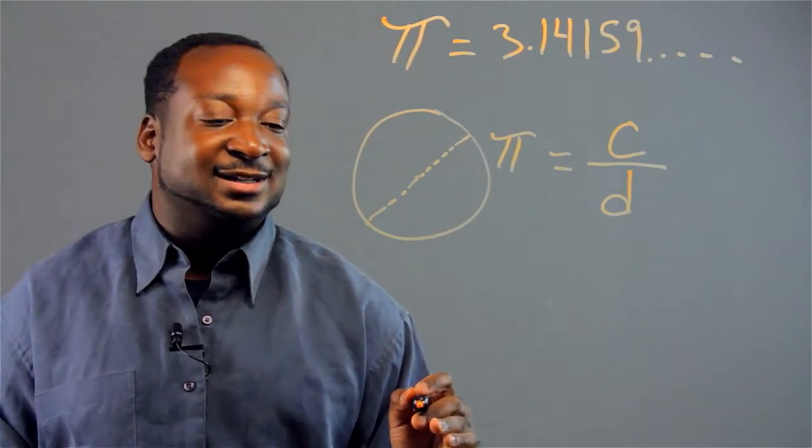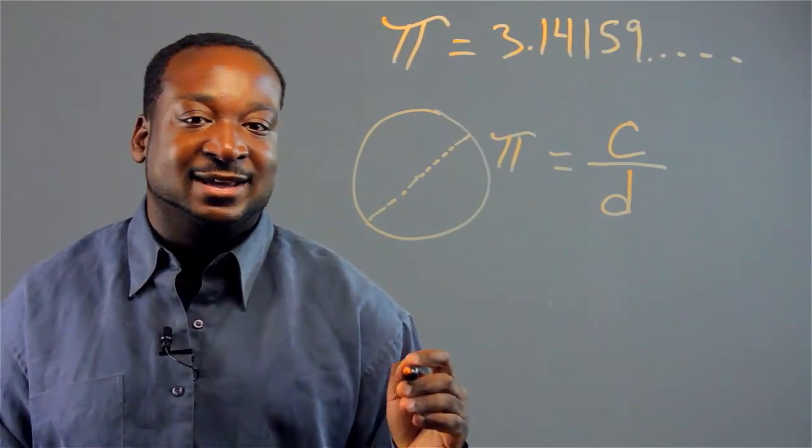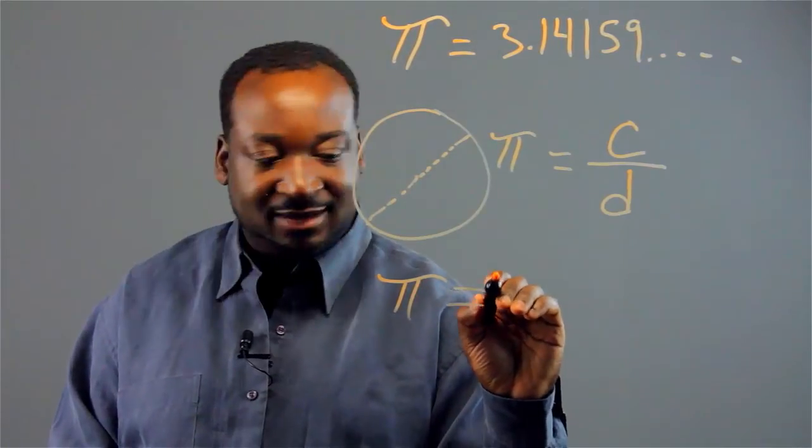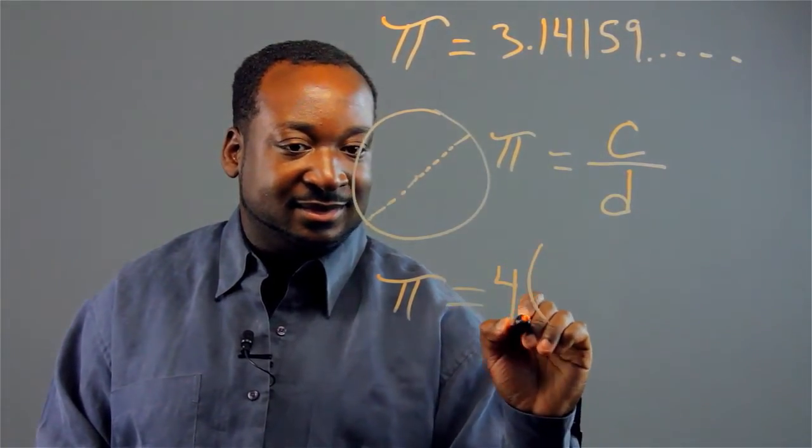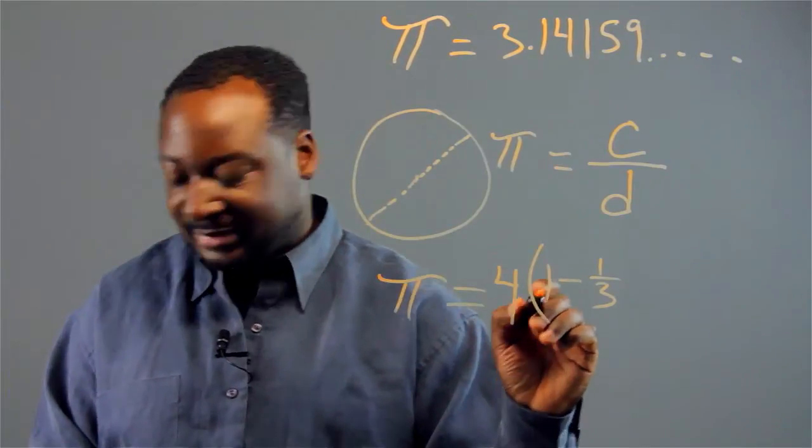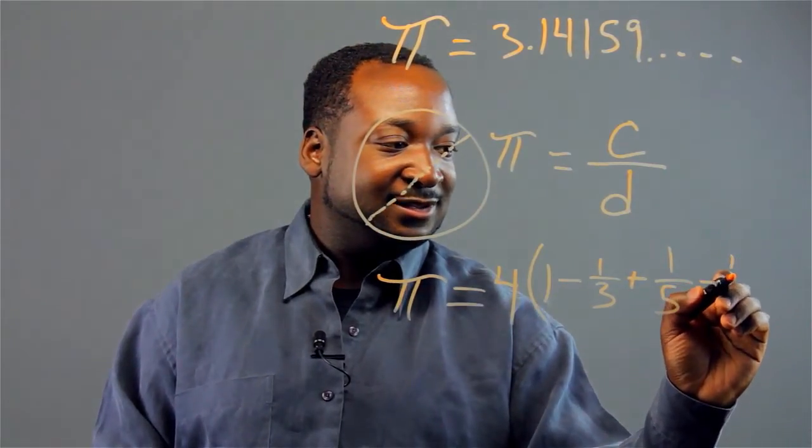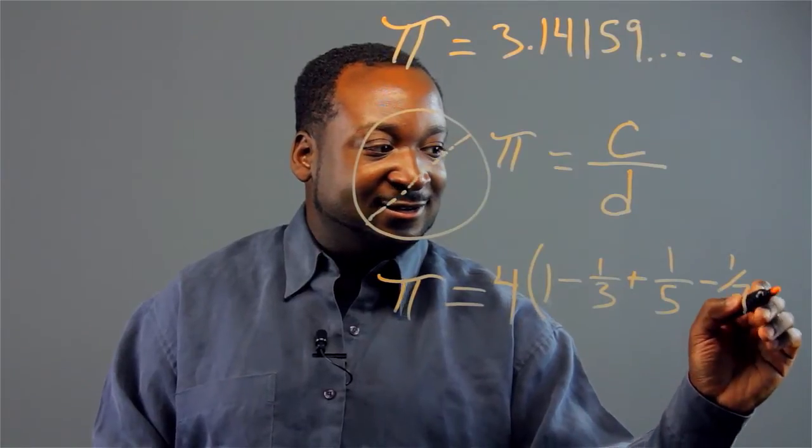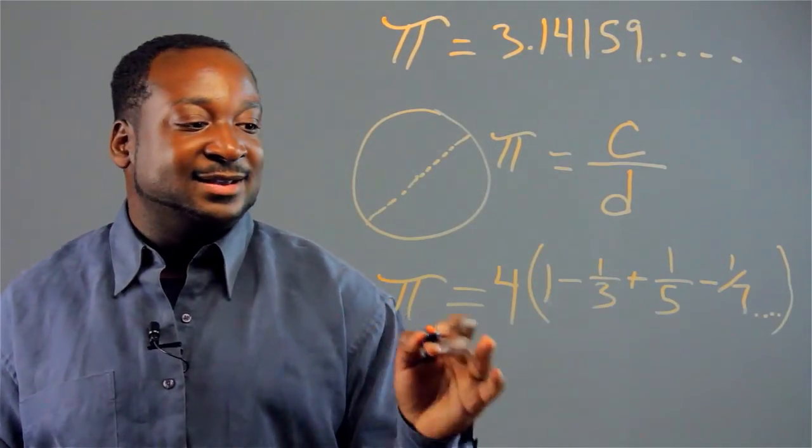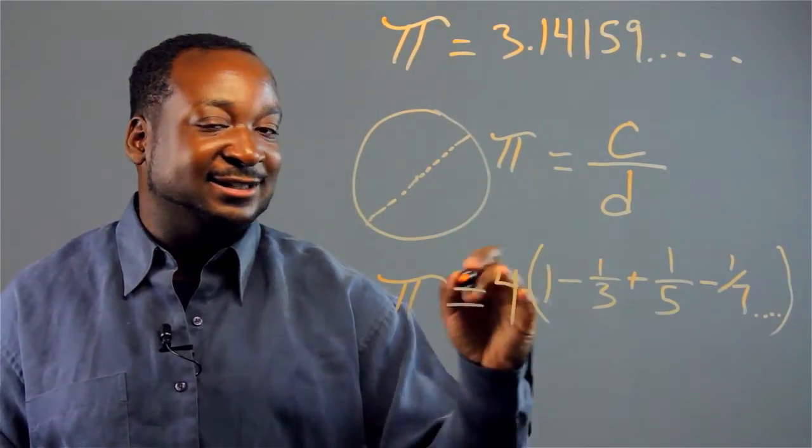Now one way to calculate pi, depending on which level of accuracy you need, you can use the pattern or the formula here. Pi is equivalent to 4 times 1 minus 1 over 3 plus 1 over 5 minus 1 over 7, on and on. You're just adding up the odd numbers in the denominator. So depending on how accurate you need your digits, this is one way of calculating the value of pi.